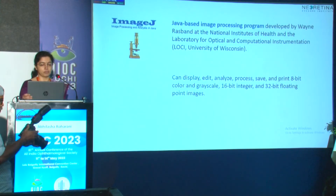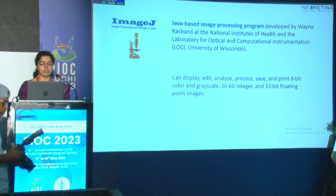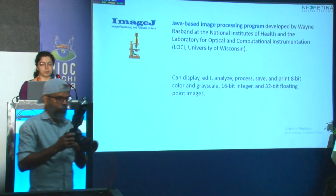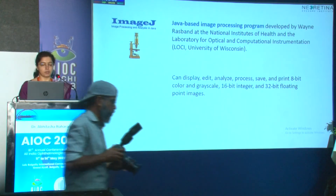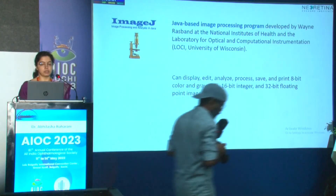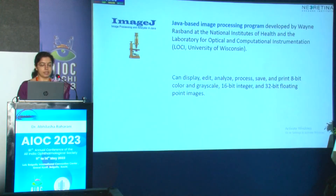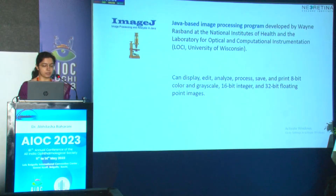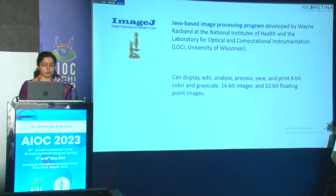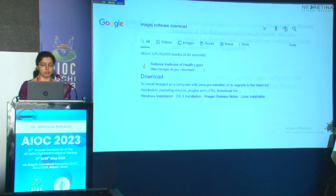ImageJ software is a Java-based image processing program developed by Wayne Rasband at the National Institute of Health. It can display, edit, analyze, process, save, and print 8-bit images. ImageJ software has been used previously, but I will show you what is different about what I am doing now.